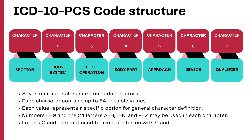There are always seven characters to an ICD-10 PCS code, and each character contains up to 34 possible values, which means there are a lot of codes that can be built based on each character value. The numbers 0 to 9 are used, and all alphabets except I and O are used for building the PCS code structure.